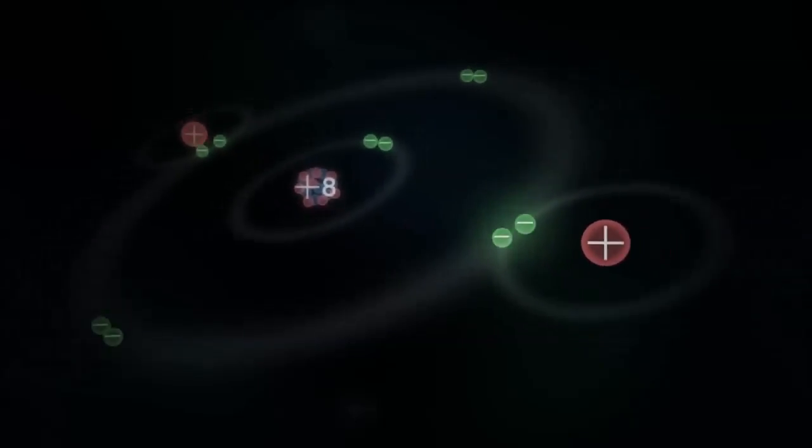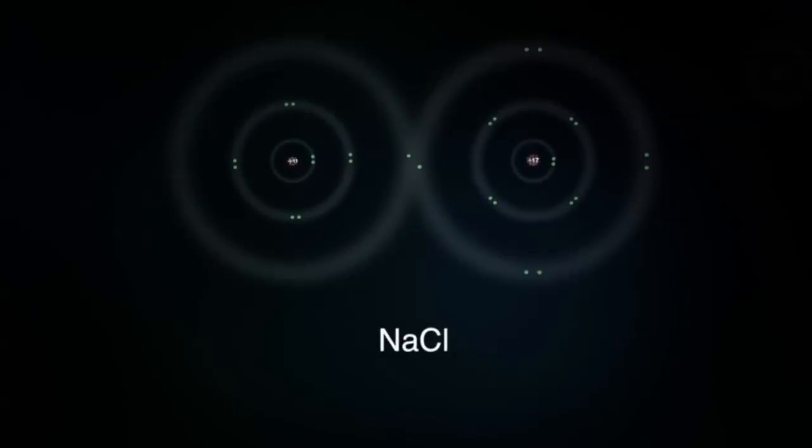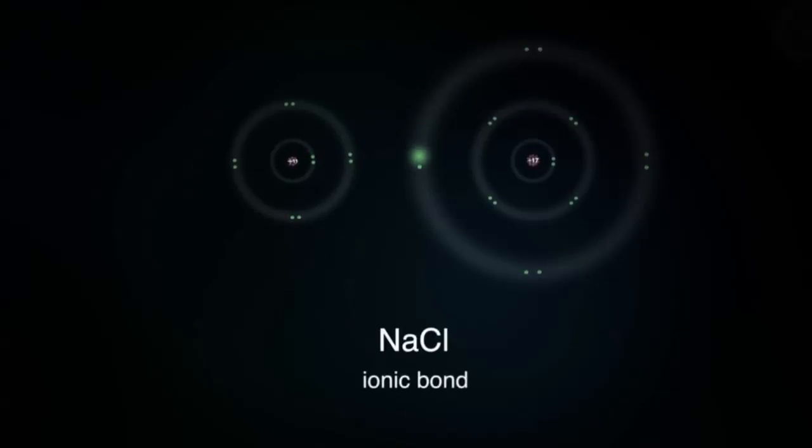By the way, this applies to ionic bonding, too. Remember sodium chloride? Well, the electron that sodium loses is the one furthest from its nucleus, and the orbital that electron occupies when it goes over to chlorine is also the one furthest from its nucleus.